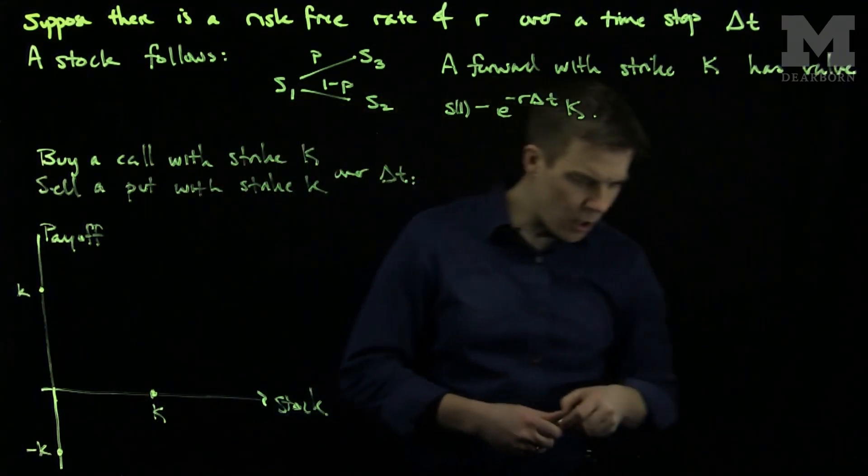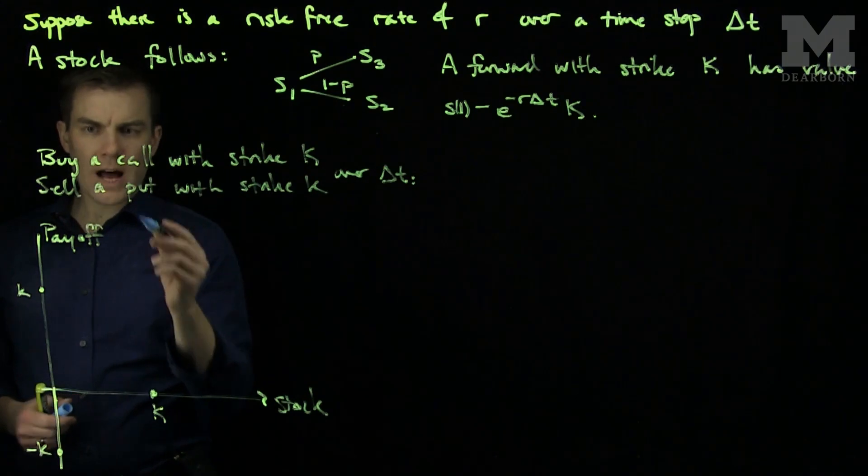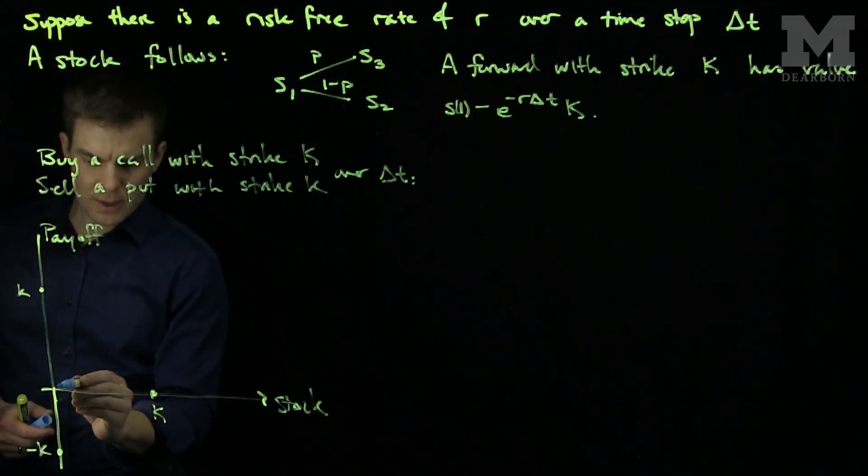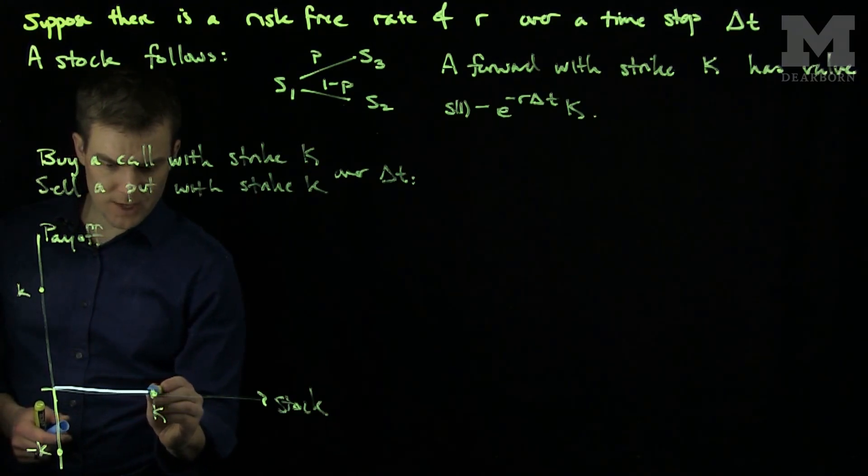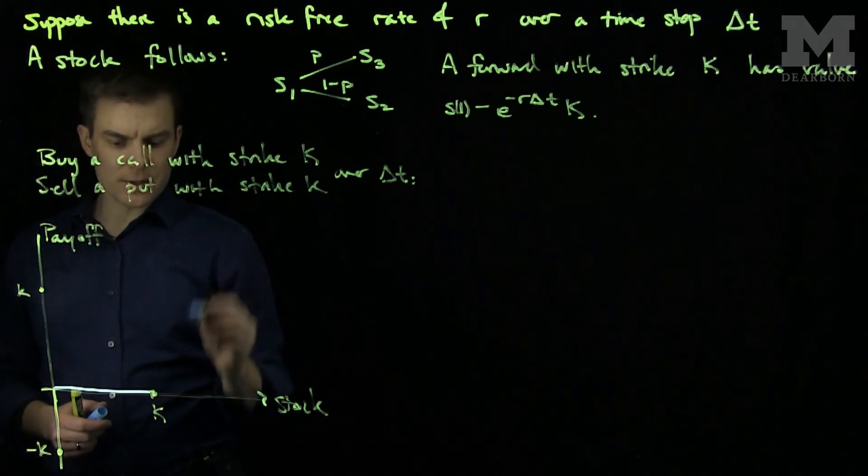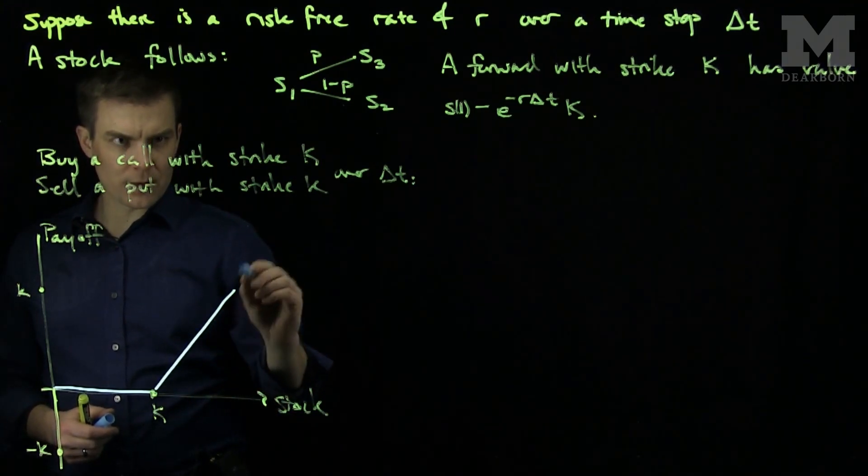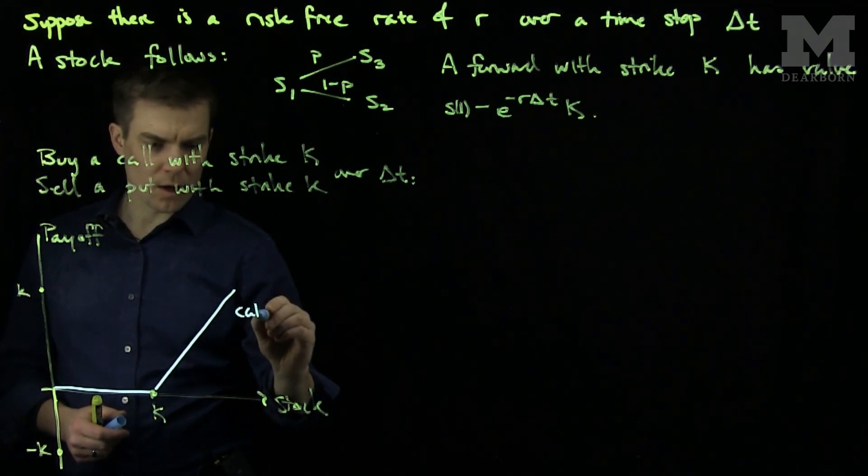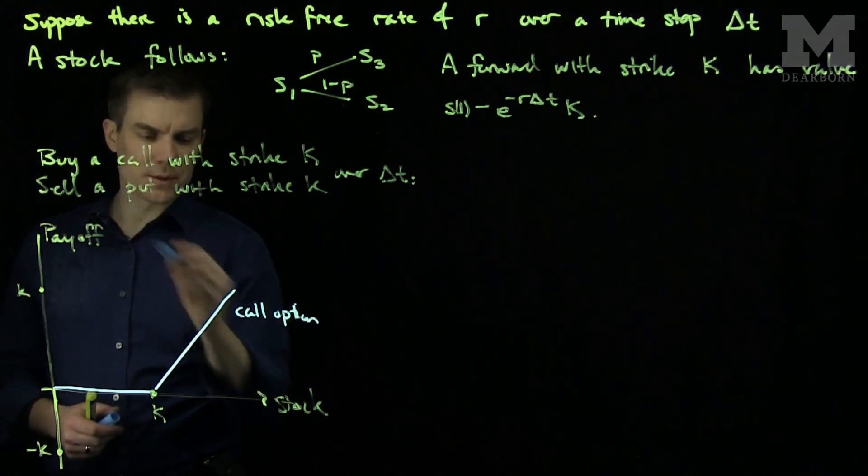Now we own a call option. The call option will give us a profit as soon as we reach the price K. As soon as we reach the price K on the stock price, my call option will go up like so. This blue is my call option payoff. This is a profit since I own it.